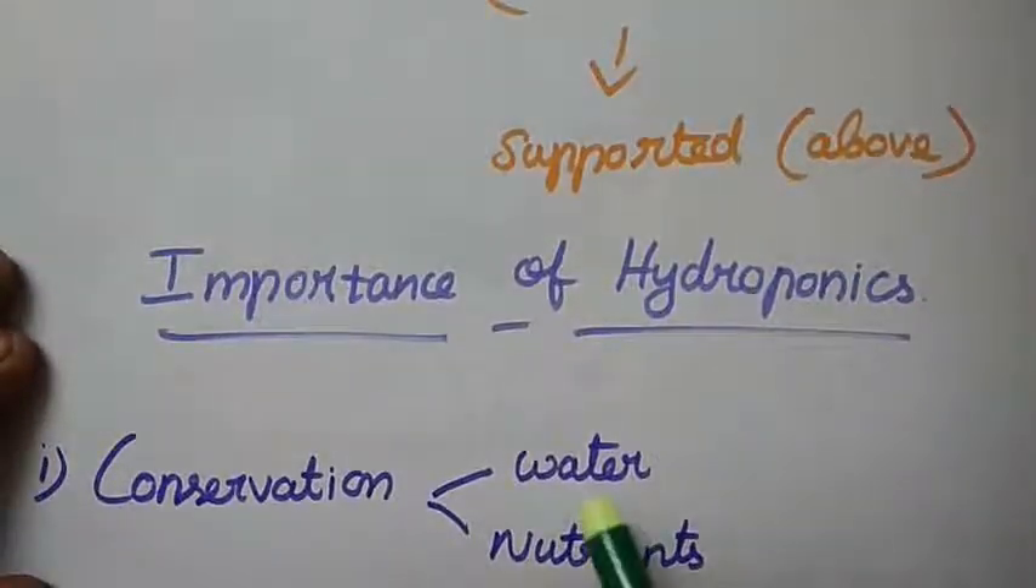And next one, they are given importance of Hydroponics. First one is conservation of water and nutrients. Conservation, there is no loss of water and nutrients. Usually, when soil surface is there, water and nutrition is continuous. In this case, water remains for use. Conservation of water and nutrition.